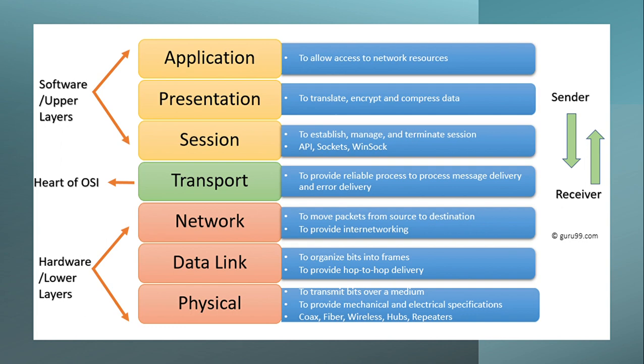The physical layer transmits bits over a medium and provides mechanical and electrical specifications, such as coax, fiber, wireless, hubs, and repeaters. The lower layers are related to hardware as well.